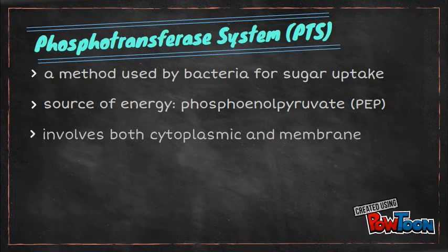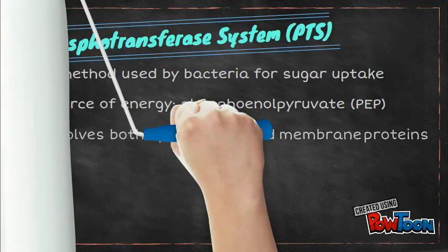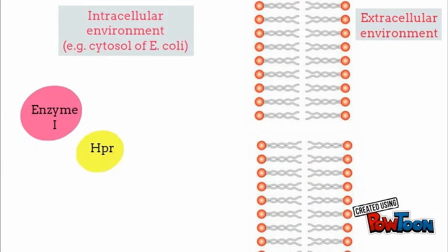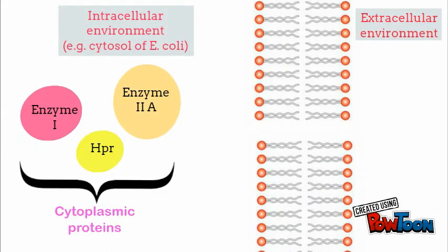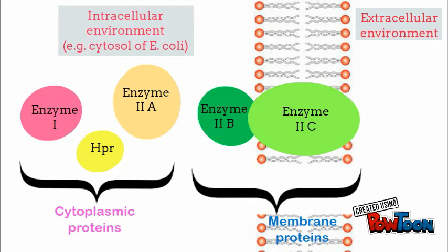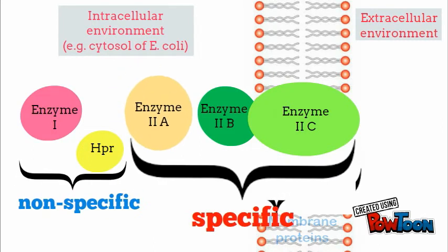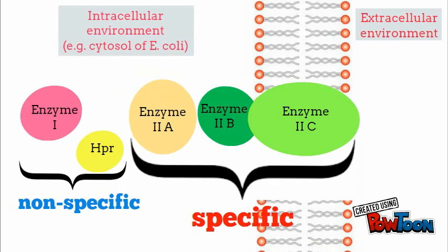PTS involves cytoplasmic proteins and membrane proteins. Enzyme 1, HPr, and Enzyme 2A are cytoplasmic proteins, while Enzyme 2B and Enzyme 2C are membrane proteins. Enzyme 1 and HPr are non-specific components participating in all phosphotransferase reactions, whereas Enzyme 2 components are specific for the uptake of each kind of sugar.